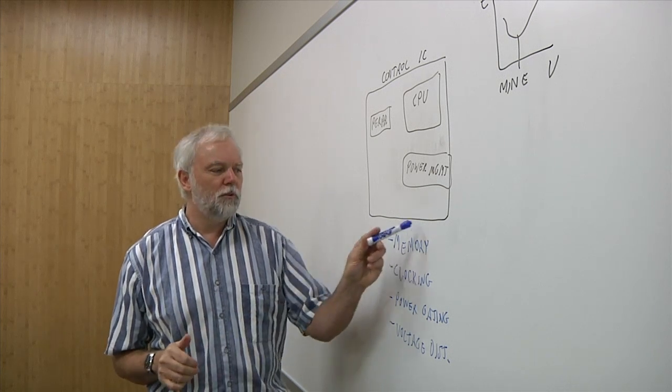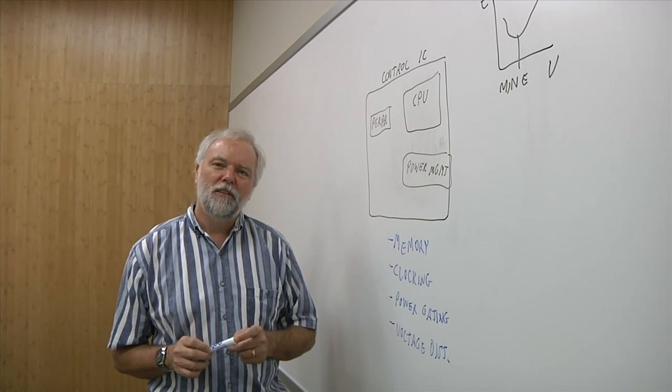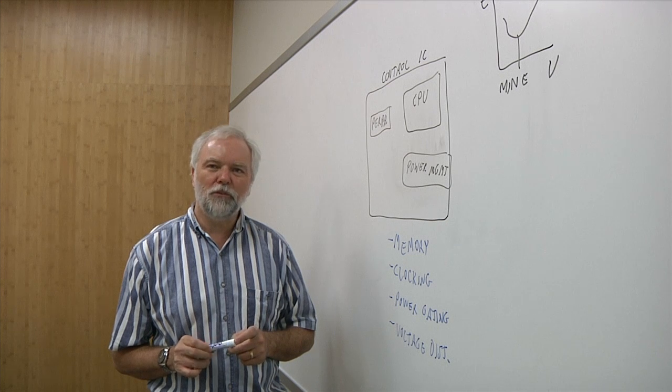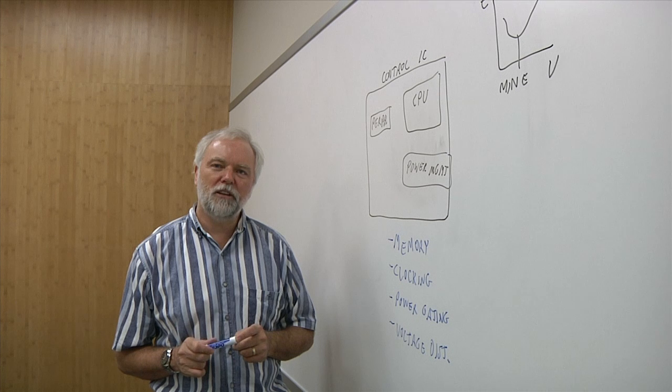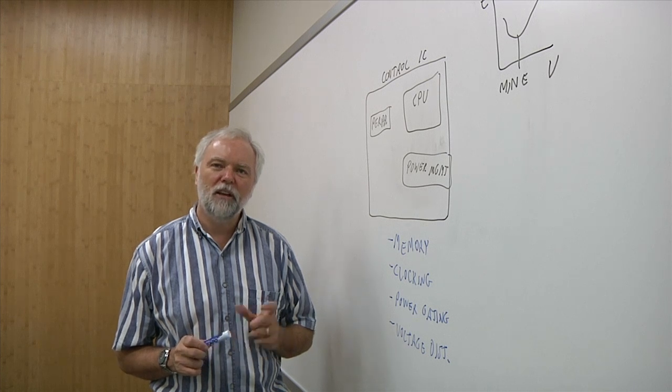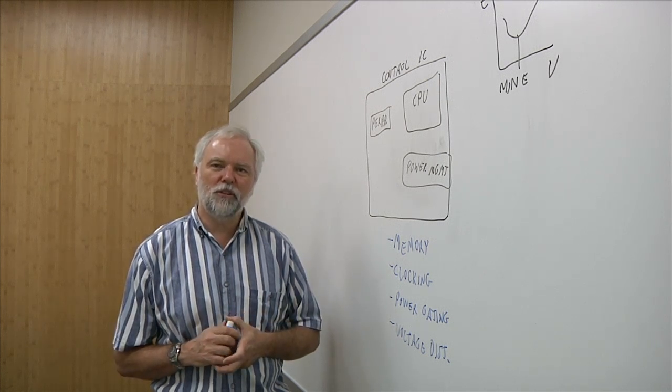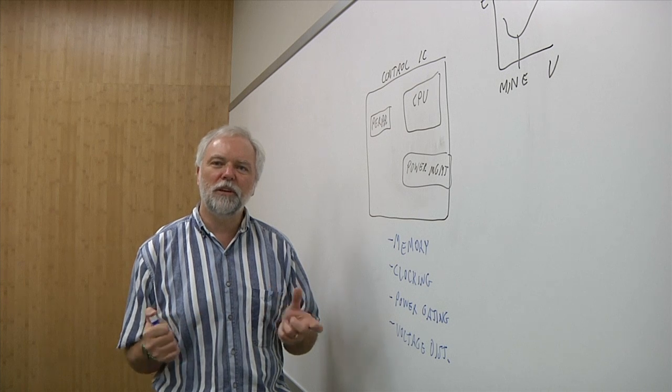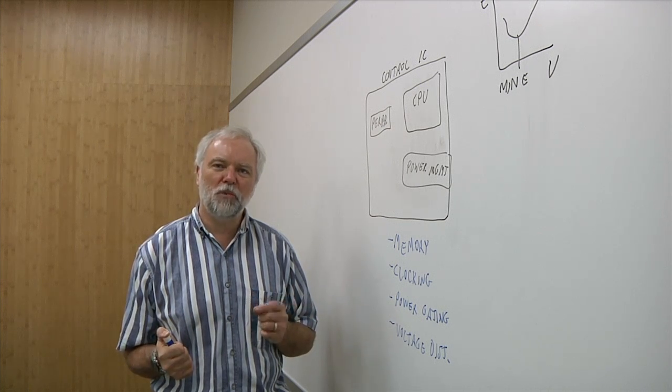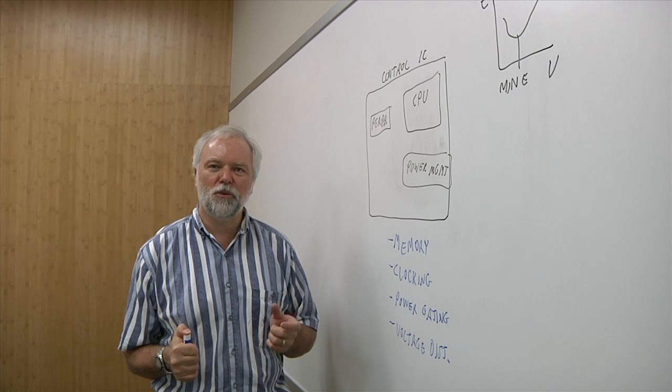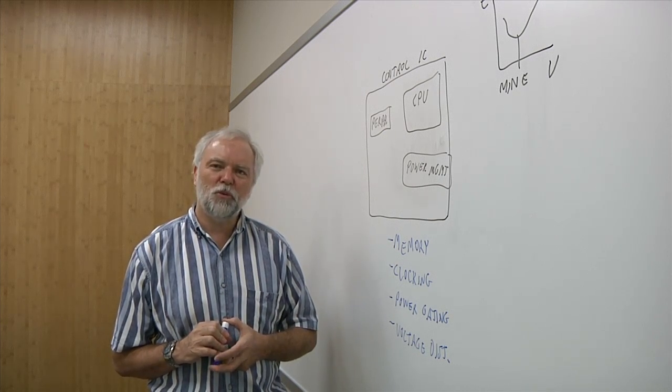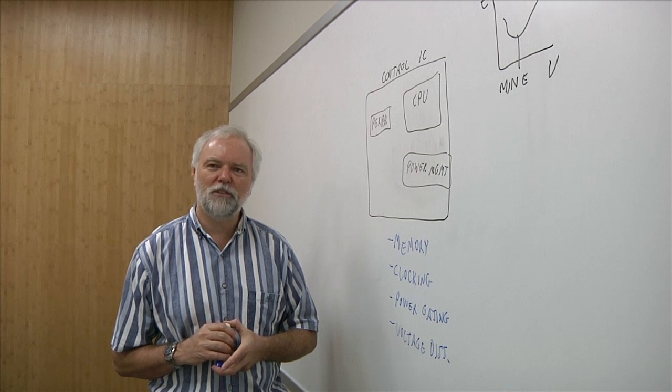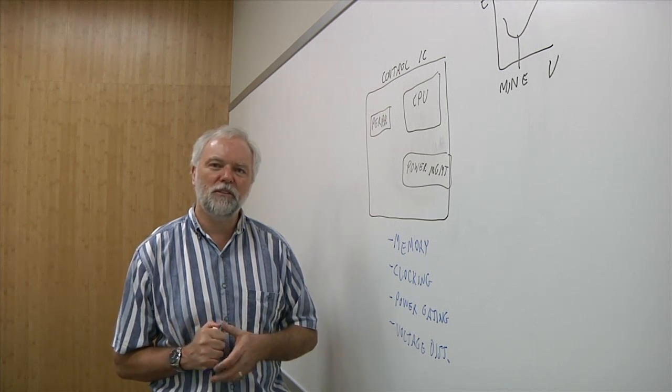So in order to get below, say, 600 millivolts-ish operating voltage, you need to augment the design, and typically that's done by adding what are essentially digital read ports, so separating the read and the write function inside the memory, possibly separating those from the storage node. So you go from having a six transistor cell up to an eight transistor cell or a ten transistor cell that allows you to operate at these lower voltages.